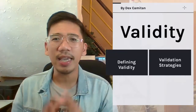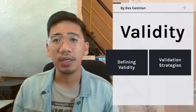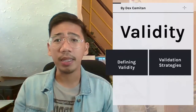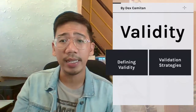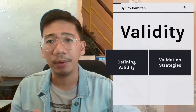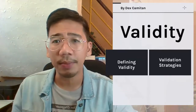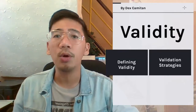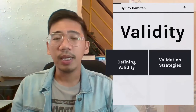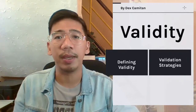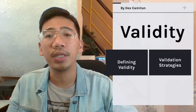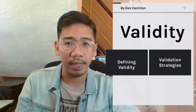Reliability and validity are closely related concepts, but they actually mean different things. A measurement can be reliable without being valid. However, if a measurement is valid, it is usually also reliable. As a refresher, when we say reliability, it is how consistently a method measures something. If the same result can be consistently achieved using the same methods under the same circumstances, the measurement is considered reliable.